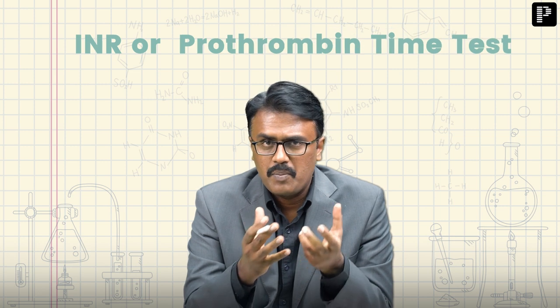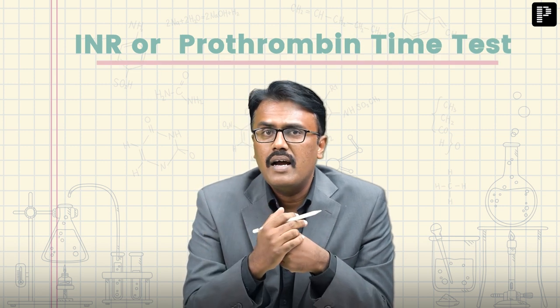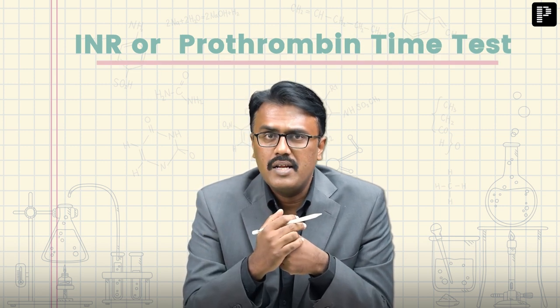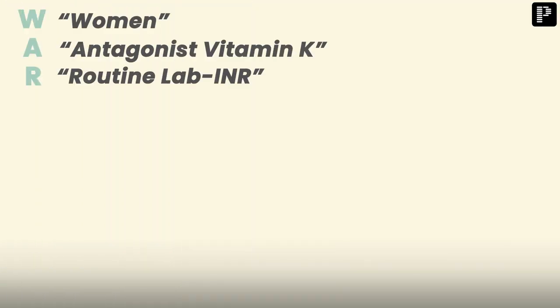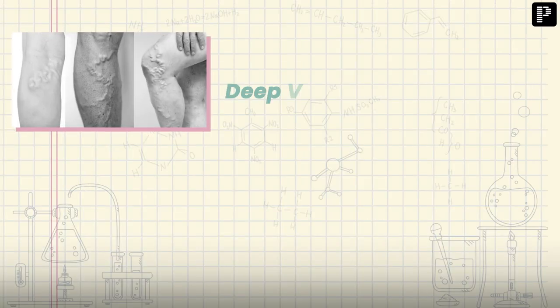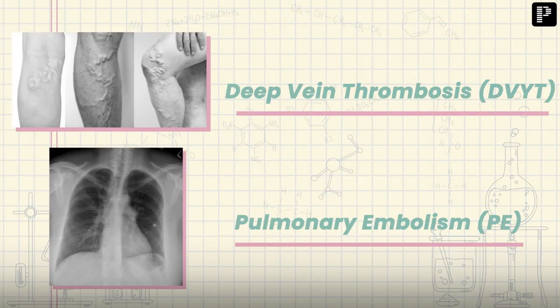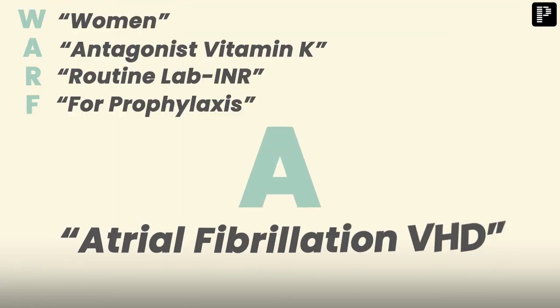R stands for Routine lab monitoring. When you prescribe warfarin, there should be routine lab monitoring using the INR — the prothrombin time, referred to as the International Normalized Ratio — which has to be monitored. F stands for prophylaxis — the drug is used for prophylaxis of deep vein thrombosis as well as pulmonary embolism.